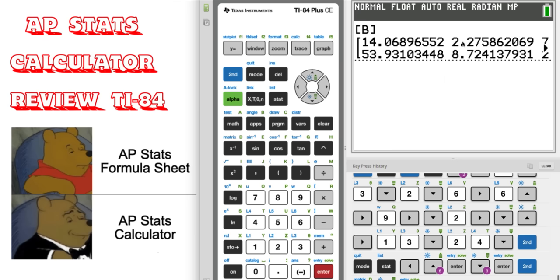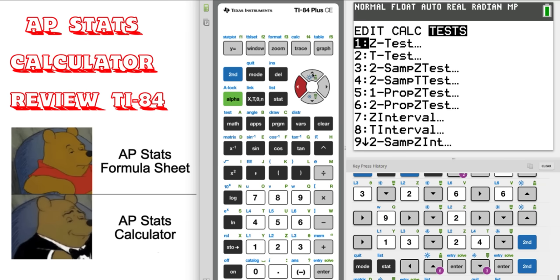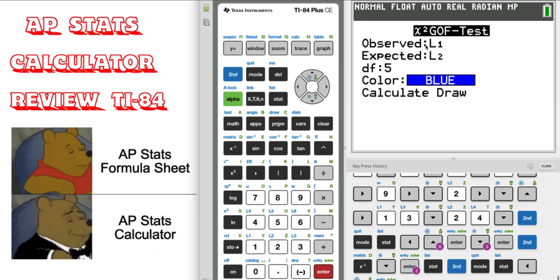But remember if you have a goodness of fit test, then we need to use the lists. So let's go down. I'm going to quit again. I'll go stat. Let's go over to tests and I'll go up to goodness of fit tests, which is D. So you have to put your observed and your expected counts. Remember observed have to be whole numbers, expected can be decimal.